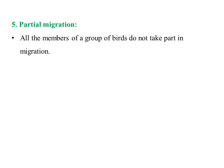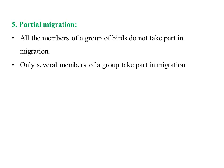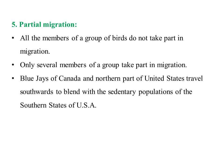In partial migration, as the name indicates, only a part of the species — only a few members — will migrate. All members of the group do not take part; only a few members take part in this type of migration. For example, the blue jays of Canada and the northern part of the United States travel southwards to blend with their sedentary population of the southern states of the USA. Blue jays are the best example of partial migration.